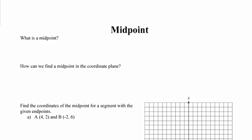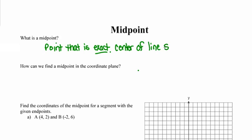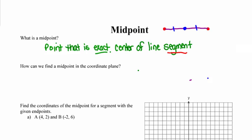So first of all, what is a midpoint? A midpoint is a point that marks the exact center of a line segment. A line segment has two endpoints — those red dots represent the two endpoints for that purple line segment. The midpoint would be the point that marks the exact center, and the two line segments it creates are congruent to one another. We show that they're congruent by putting a little hash mark on each piece.